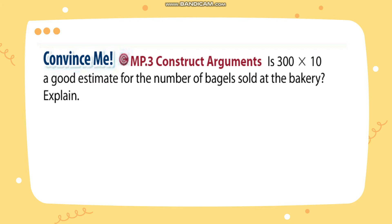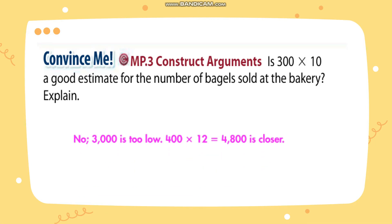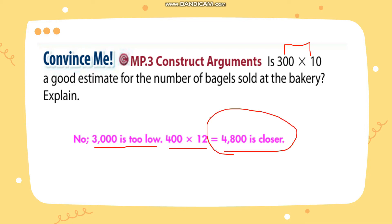Is 300 multiplied by 10 a good estimate for the number of bagels sold at the bakery? The answer is no, because 3,000 is too low. The best estimate is 400 multiplied by 12, and 4,800 is closer.